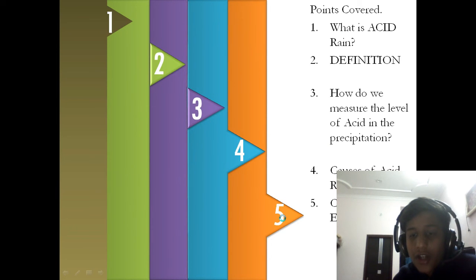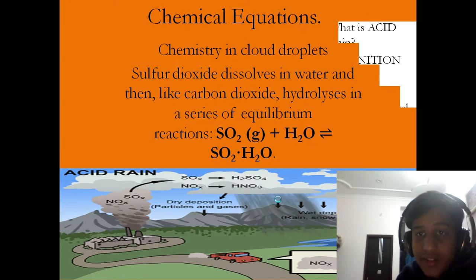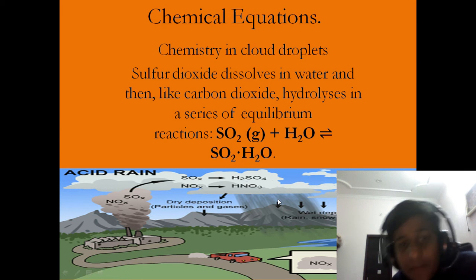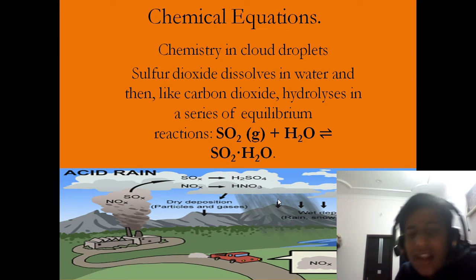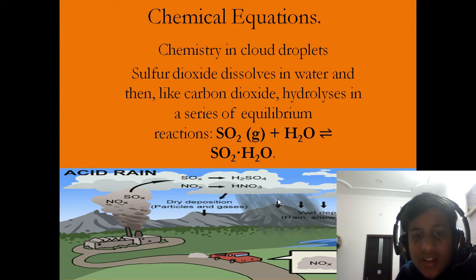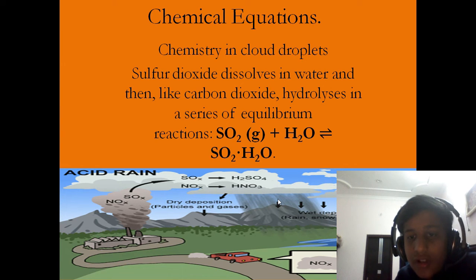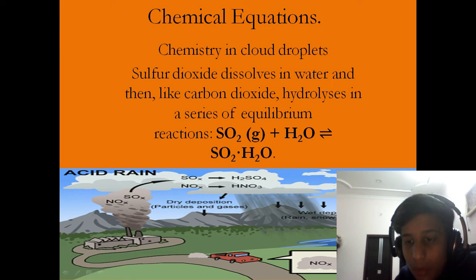What are the chemical equations in acid rain? Chemistry in cloud droplets: sulfur dioxide dissolves in water and then, like carbon dioxide, undergoes hydrolysis in a series of equilibrium reactions. The equation is: SO₂(g) + H₂O → SO₂·H₂O.